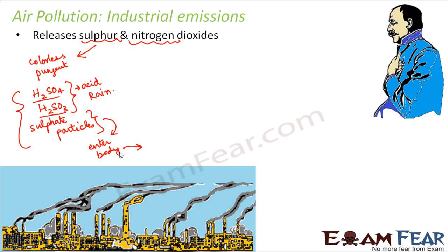That is how sulfur dioxide can affect you and be harmful. It can cause cough, irritation in the nose and throat, and discomfort around your chest. These are some of the consequences that might happen if these sulfate particles enter inside your body.